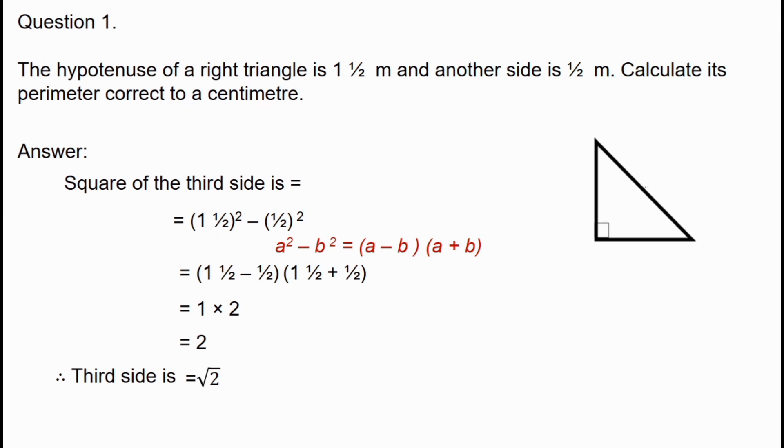Let's find the perimeter. Perimeter equals 1.5 plus half plus root two. That is two plus root two.